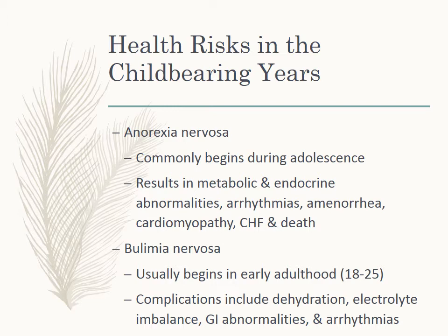Bulimia nervosa involves secret uncontrolled binge eating alternating with methods to prevent weight gain, such as self-induced vomiting. Those with bulimia are more likely to feel shame or disgust about it, and hopefully they'll seek help a little bit earlier. This usually affects the early adulthood range of 18 to 25. A treatment plan for eating disorders initially focuses on physiologic homeostasis. Once the body has stabilized, the next goal is maintaining adequate caloric intake, and at the same time we try to reverse the negative views they have of themselves.